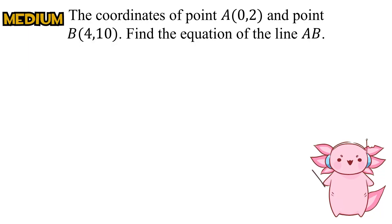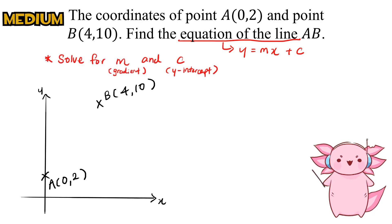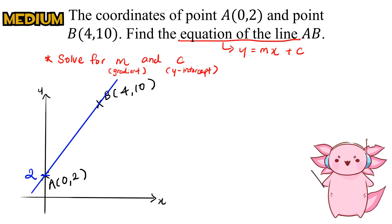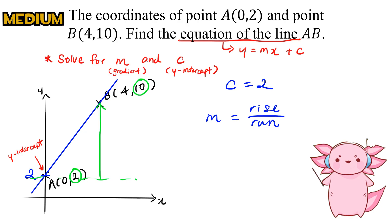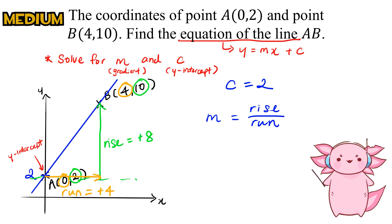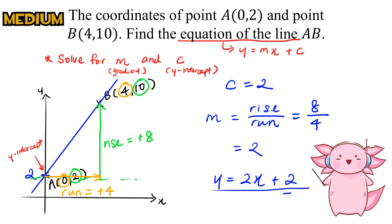In order to find the equation of a line, it's in the form y equals mx plus c, where we solve for the gradient m and y-intercept c. Since the line cuts the y-axis at 2 at point A, c equals 2. To find the gradient, it's rise over run — the y-value goes from 2 to 10, so the rise is 8, and the x-value goes from 0 to 4, so the run is 4. The gradient is 8 divided by 4, which equals 2. The final line equation is y equals 2x plus 2.